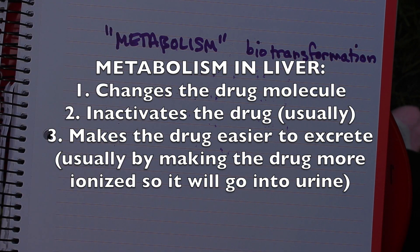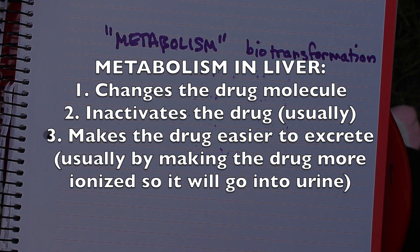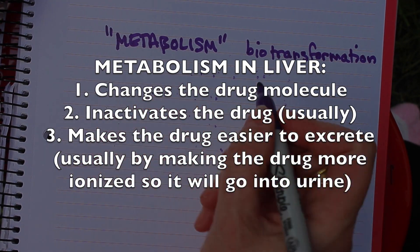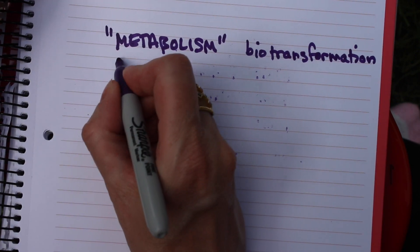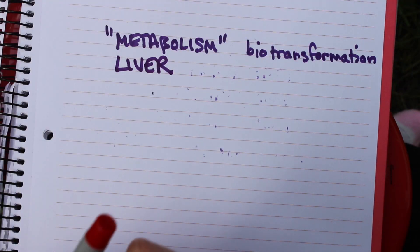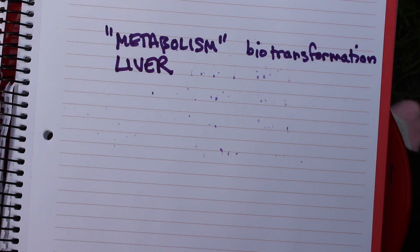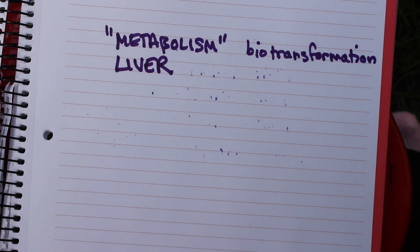For most of the drugs we'll talk about in this class, the place where the drug is metabolized is the liver. Every time the drug circulates through the bloodstream, some percentage of that blood goes to the liver — that's just how your body works. The heart pumps blood to all the different organs, and part of that blood goes to the liver.